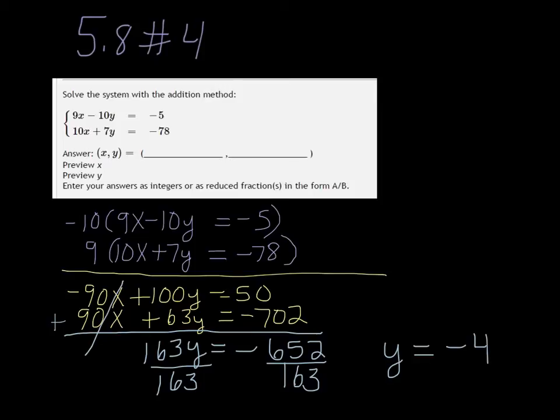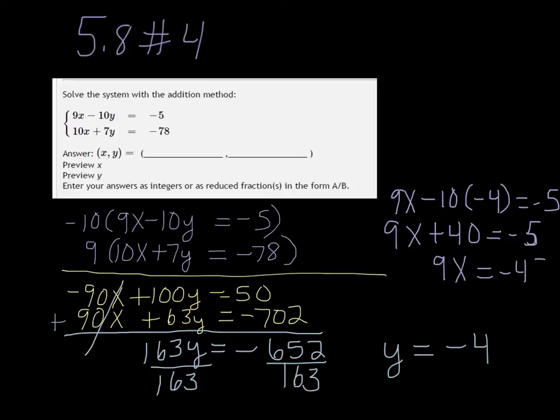And then you can find X by putting Y back into either equation. So I'm going to put it into the first one. So it's 9X minus 10 times negative 4 equals negative 5. So that's 9X plus 40 equals negative 5. And then if I subtract 40 on both sides, I get 9X equals negative 45, and X would be negative 5.